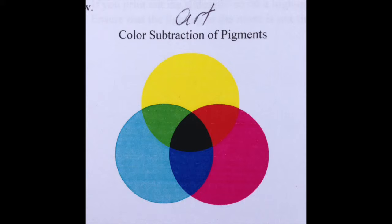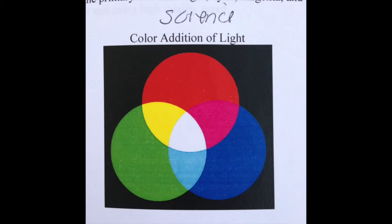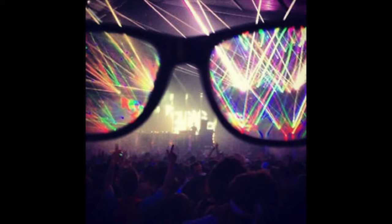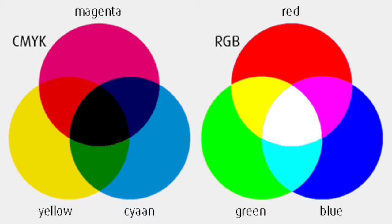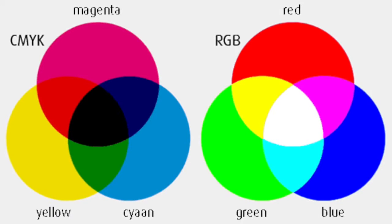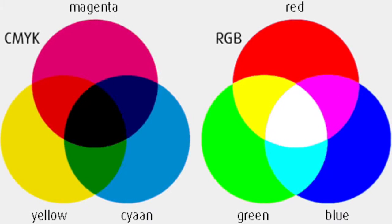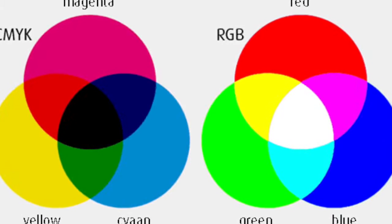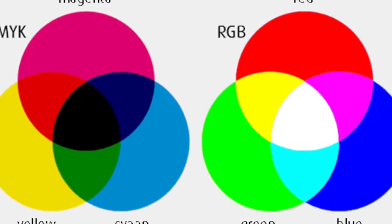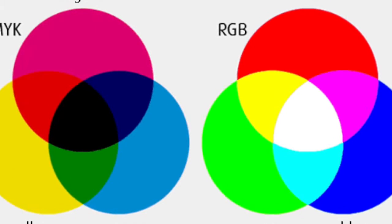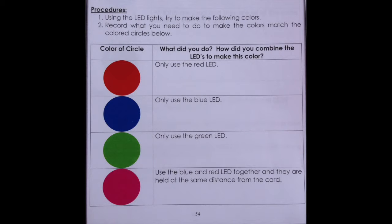What fascinates me about color in art versus color in science and light is how different they really are. White light is composed of many colors of light — once the diffraction glasses are put on, it's a rainbow of colors exploding from it. In art, the three primary colors are red, yellow, and blue. In light, the three primary colors are red, green, and blue, which causes a completely different truth about color theory. When mixed together in different proportions, these colors of light, just as in art, create millions of different colors.